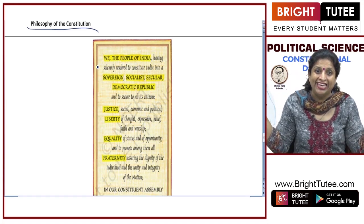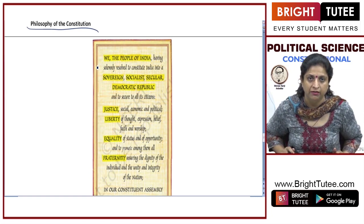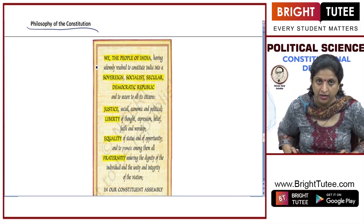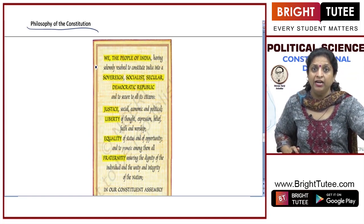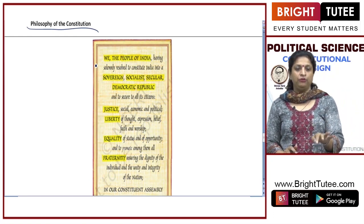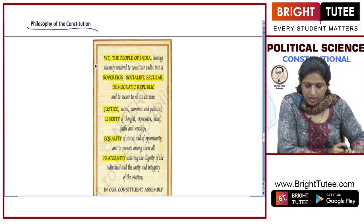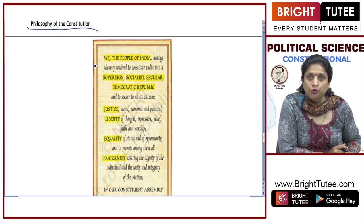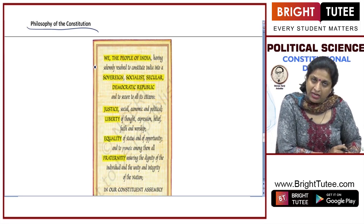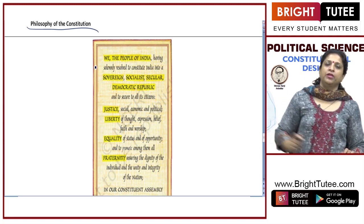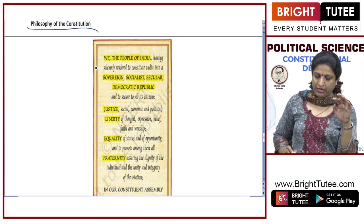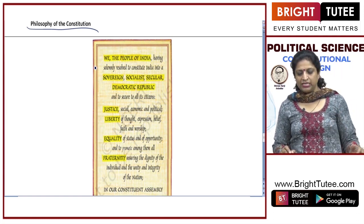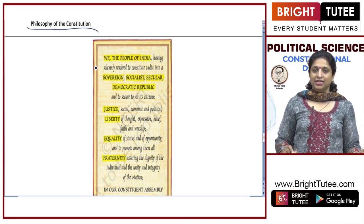Each and every single word in this Preamble has a meaning. 'We the people of India having solemnly resolved to constitute India into' — together we have to make our country sovereign. Sovereign means a completely independent country, free from all types of external control, having an independent foreign policy. Before 1947 we were not sovereign. The first guiding value is to make our country sovereign. Socialist means social and economic equality — no discrimination between upper caste and lower caste, and no gap between rich and poor.